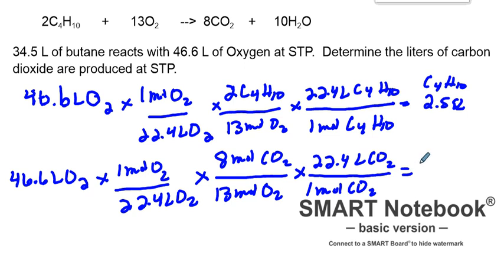And that turns out to be 28.7 liters of carbon dioxide. So that's how you do limiting reactant stoichiometry for gases at STP.